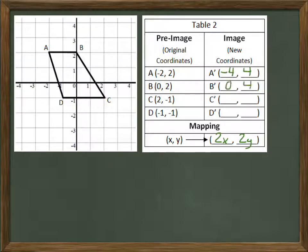Likewise, b is going to change to 0, 4. C will change to 4, negative 2. And d will change to negative 2, negative 2. So let's plot that and just see what it looks like.